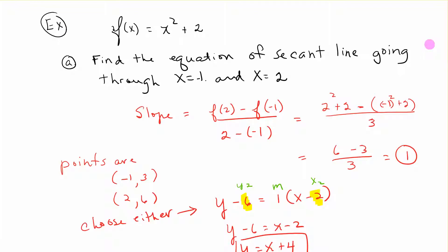We have the equation f(x) = x² + 2. Find the equation of the secant line going through x = -1 and x = 2. Remember the formula for slope is (y₂-y₁)/(x₂-x₁). We're not given the y's, so we have to figure out f(2) = 2² + 2, and f(-1) by plugging in -1. We ultimately have (6-3)/3 = 1. The slope of the secant line is 1.